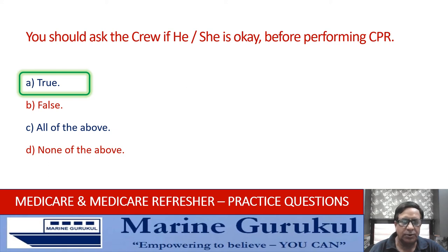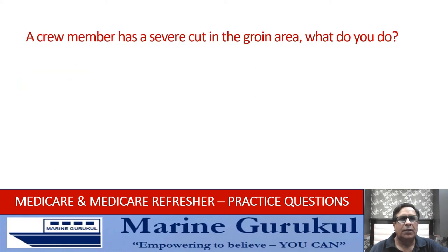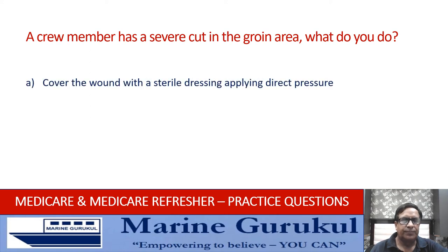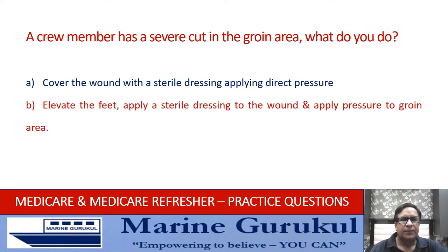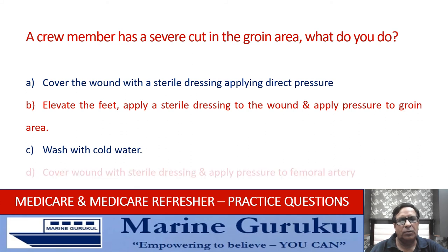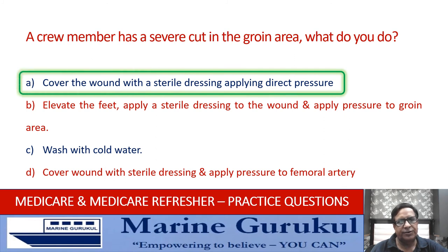A crew member has a severe cut in the groin area. What do you do? Cover the wound with sterile dressing applying direct pressure; elevate the feet, apply a sterile dressing, and apply pressure on the groin area; wash with cold water; or cover the wound with sterile dressing and apply pressure to the femoral artery. The correct action is A — cover the wound with sterile dressing and apply direct pressure onto the wound.